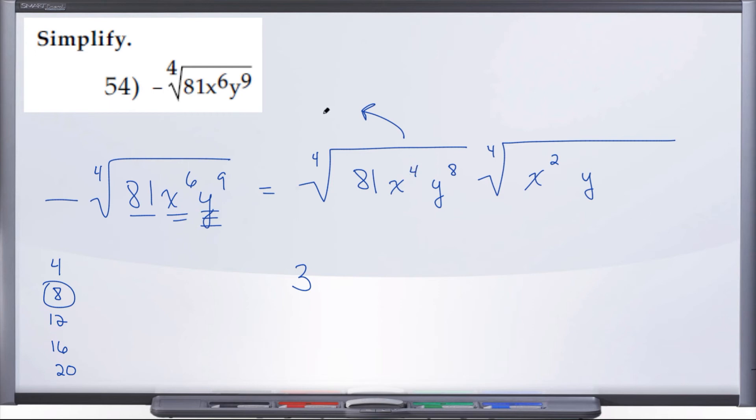And now when x to the fourth comes out, what is it going to come out as? Well, it's going to come out as an x. But what about the index, or excuse me, rather the power, the exponent? Well, to find out what the exponent is, what we do is we take the exponent that was under the radical and divide it by the root.